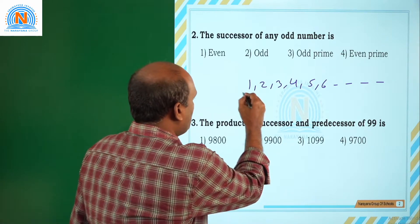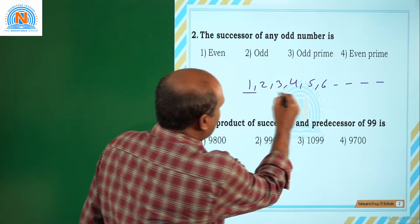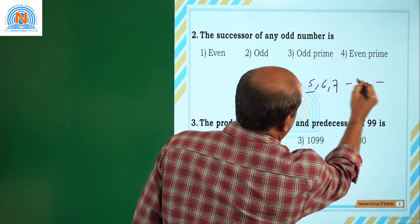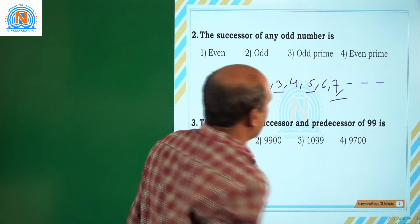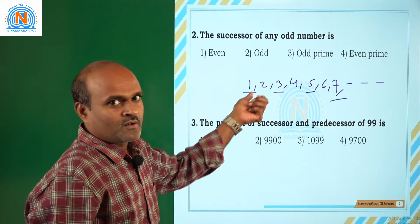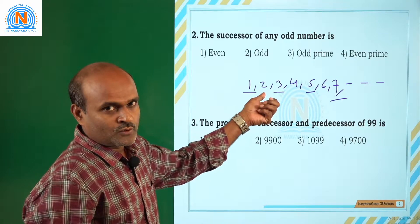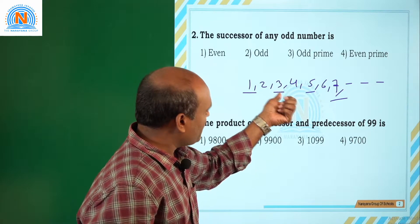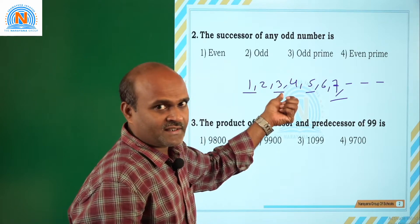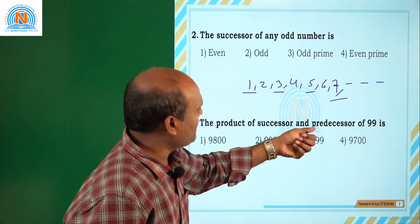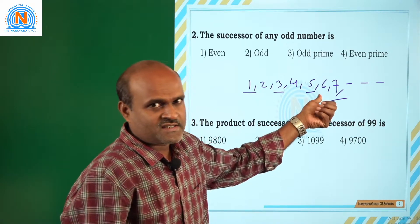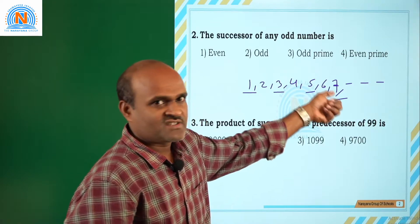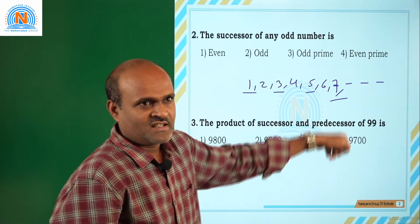Suppose this is 1 — 1 is an odd number, 3 is an odd number, 5 is an odd number, 7 is also an odd number. What is the successor of 1? It's 2, and 2 is an even number. Next, 3 is an odd number — what is the successor of 3? It's 4, and 4 is an even number. Next, 5 is an odd number — what is the successor of 5? It's 6, and 6 is an even number.